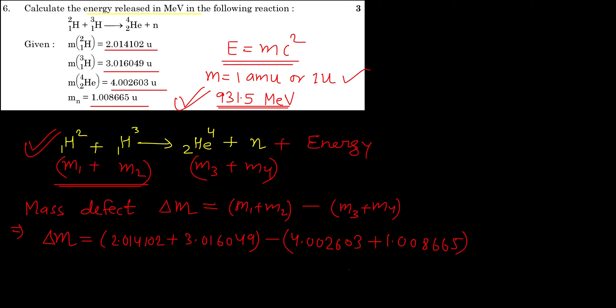Minus 4.002603 plus 1.008665. You should understand that in such questions you cannot round off numbers — the many decimal places given in the question are significant. You have to consider all the digits right to the last step.